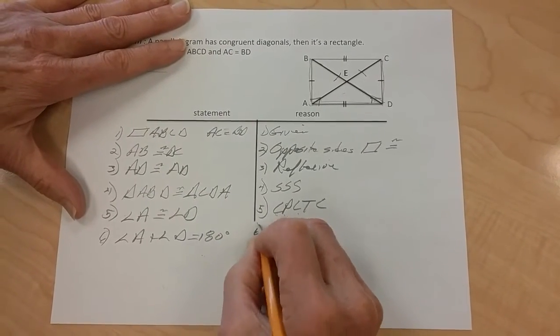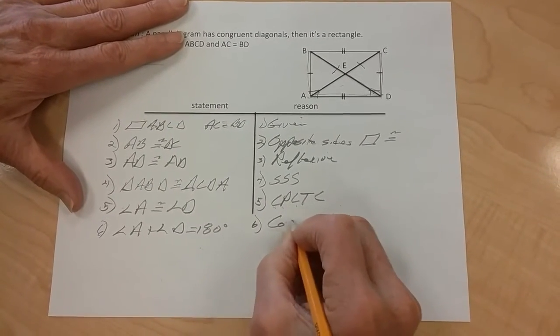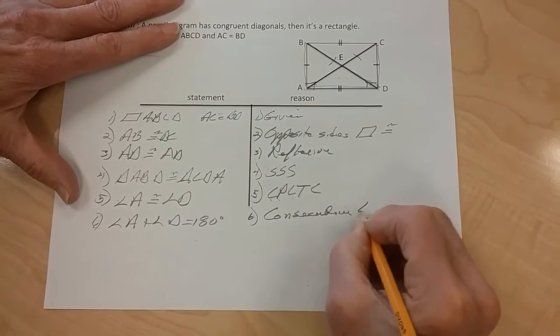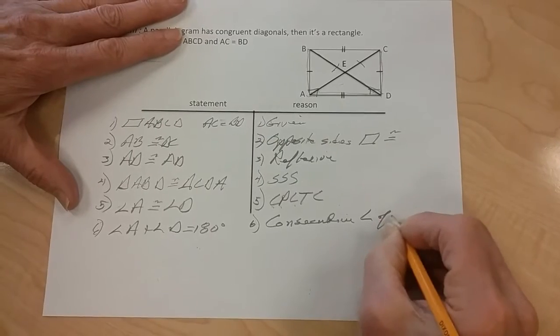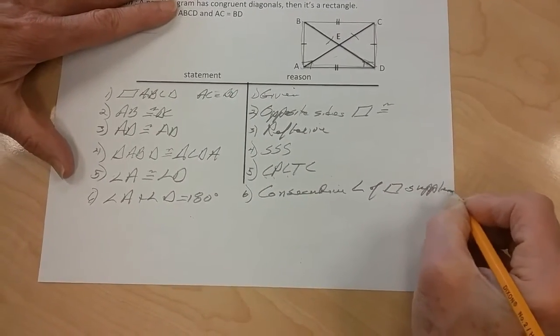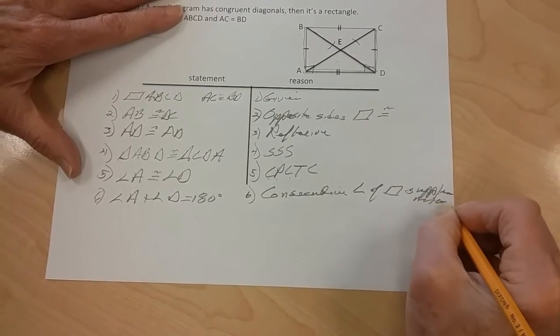So it's 6. We know that angle A plus angle D equals 180 degrees. And 6, we know that consecutive angles of a parallelogram are supplementary.